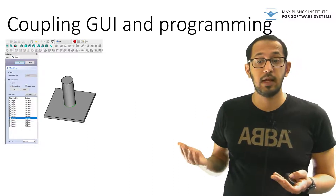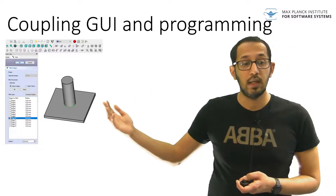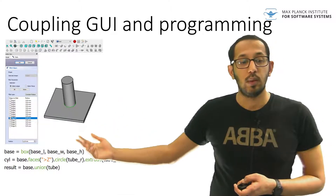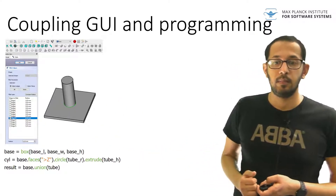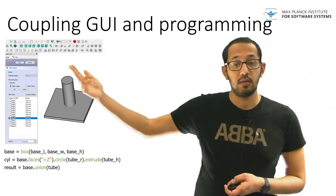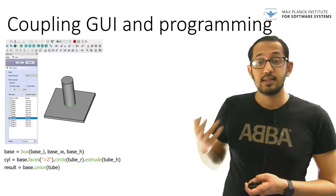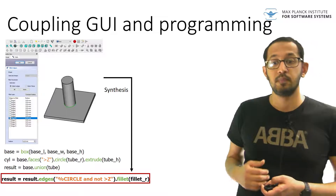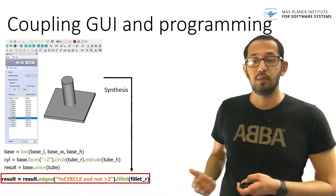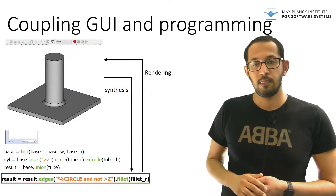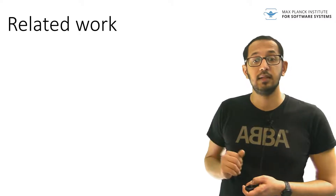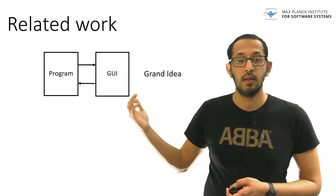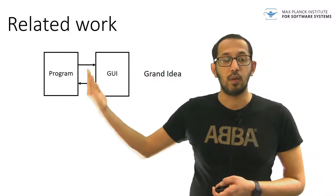This brings me back to our system. We link GUI and programming so that each element in the GUI can be mapped back to a line of code in the program. When a GUI operation is performed — a fillet, for example — we can synthesize a relevant subprogram and add it to the programmatic representation. Finally, a render of the modified program is used for rendering the GUI. Changes in the GUI are reflected back in code and vice versa.